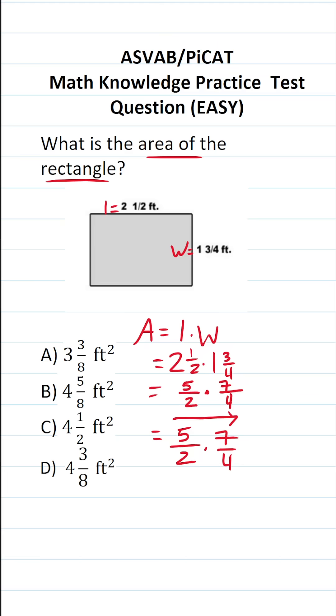When you multiply fractions, you multiply straight across. So we do 5 times 7, which is 35, over 2 times 4, which is 8.